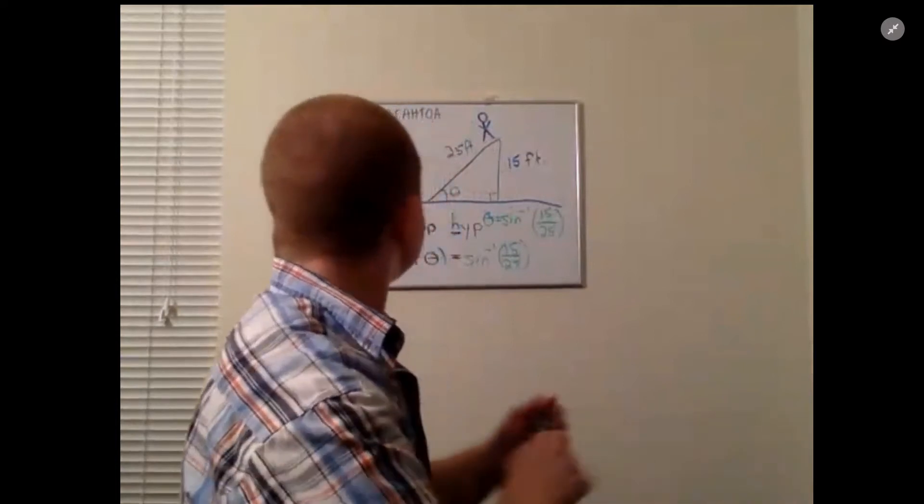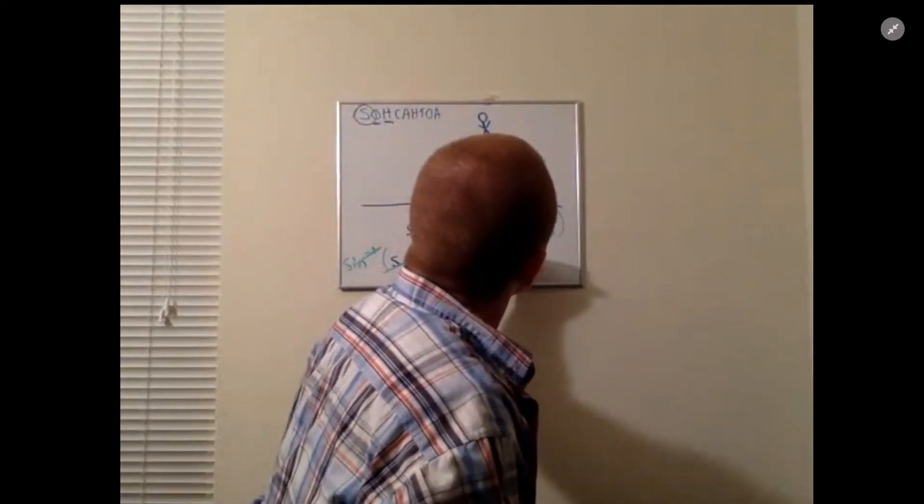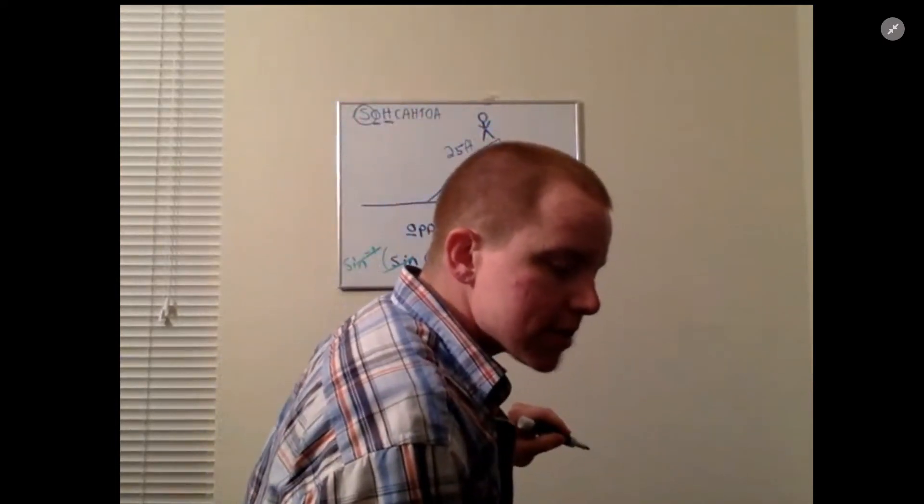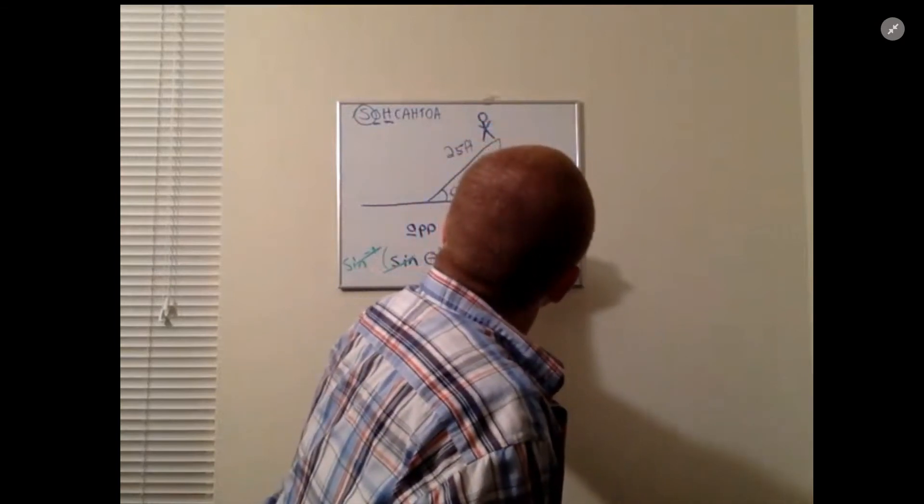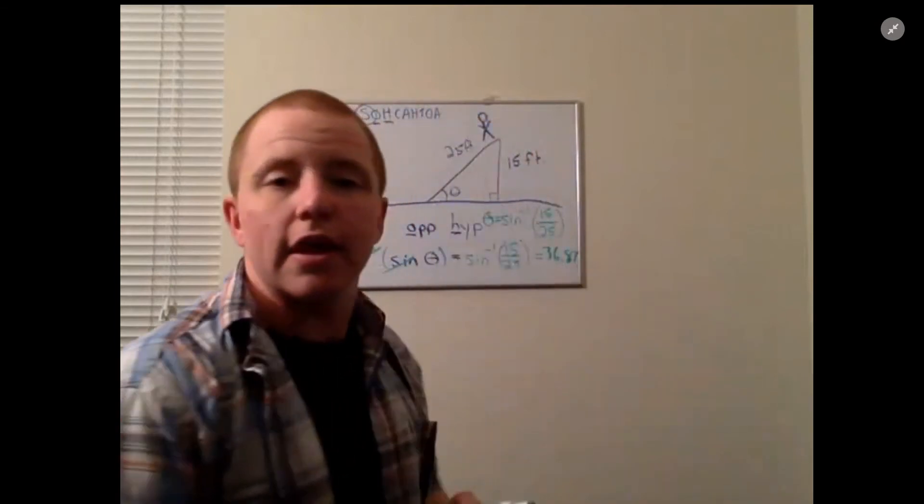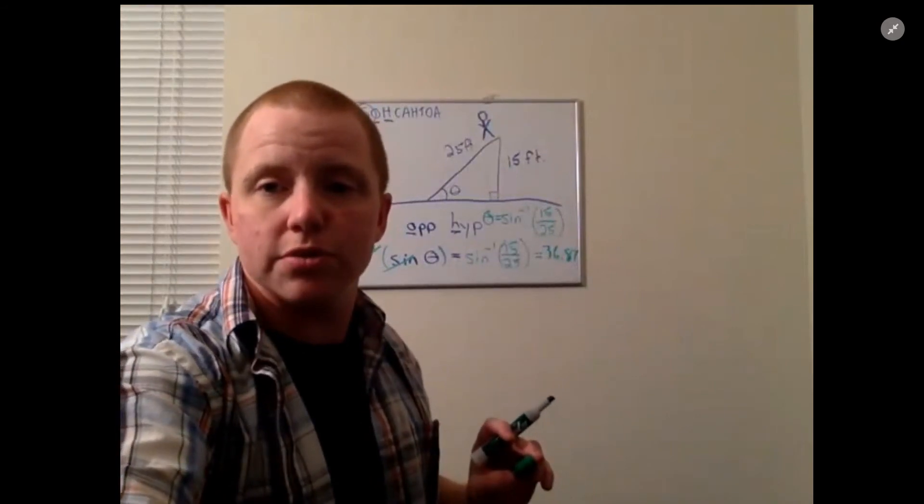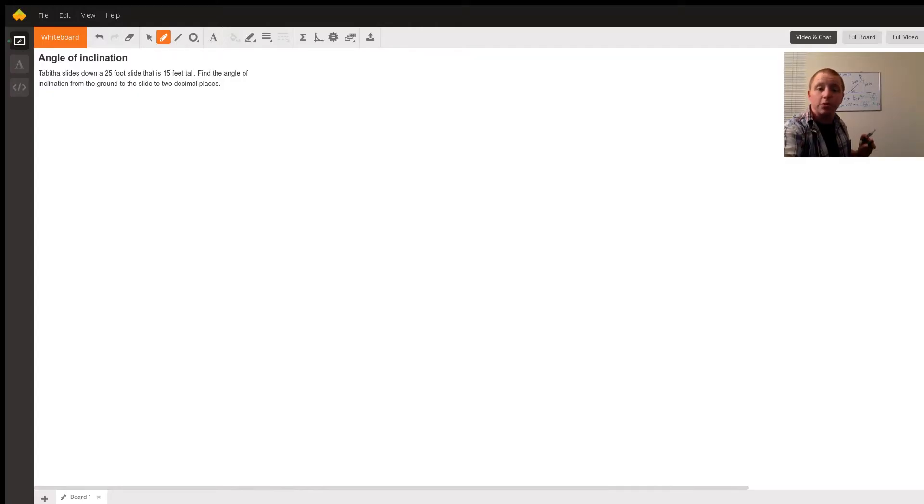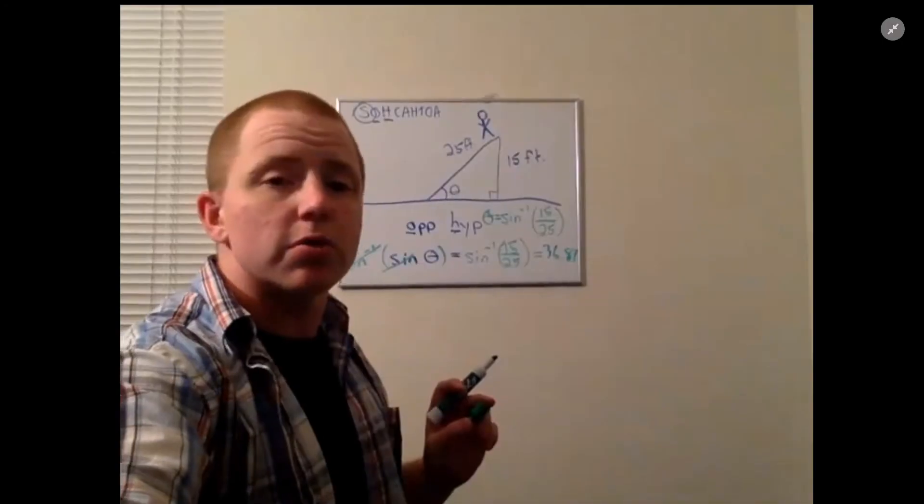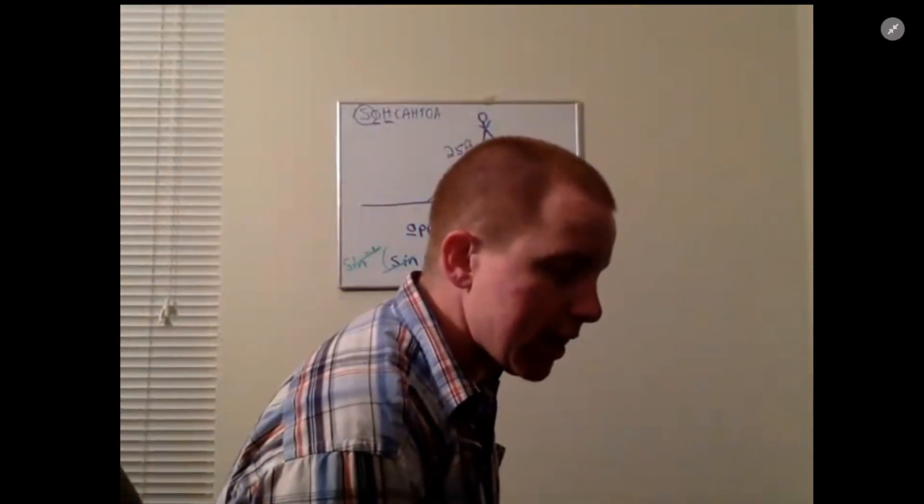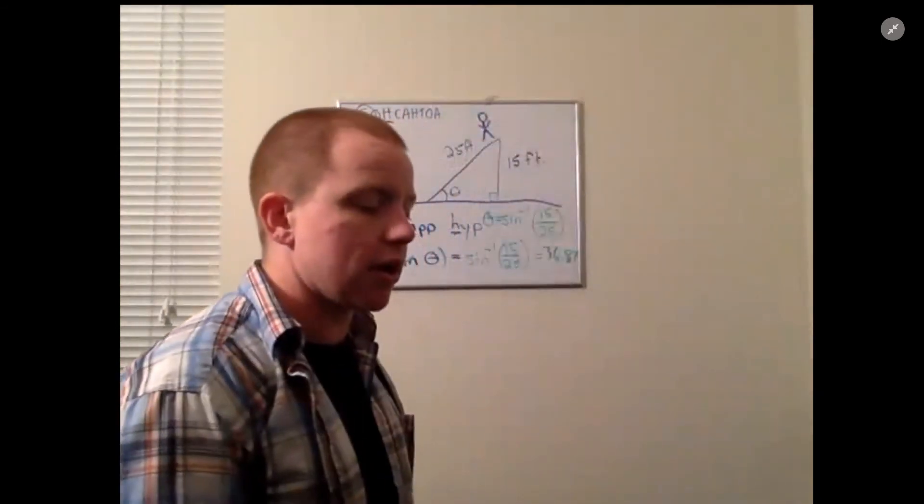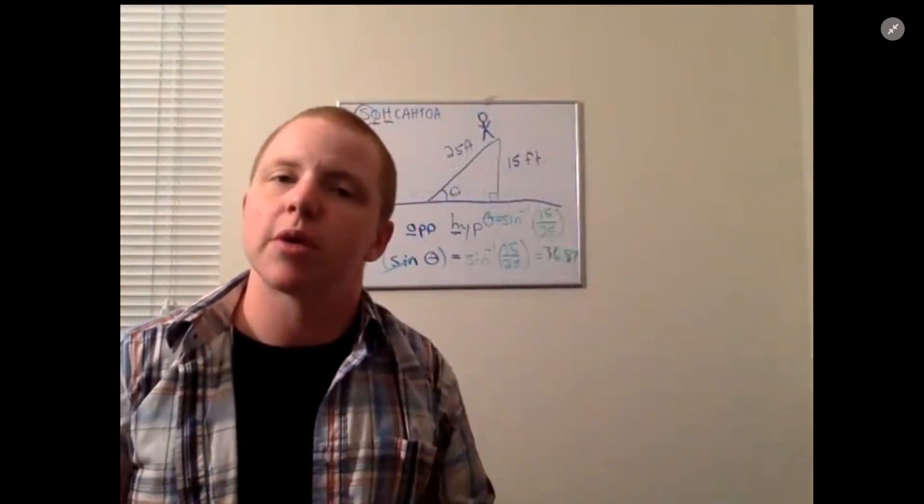I have 36.87. It said to round to two decimal places, so two decimal places that would be 36.87 because in the calculator it's 0.869 so that would round up to 0.87.